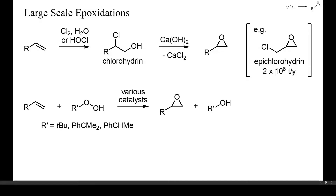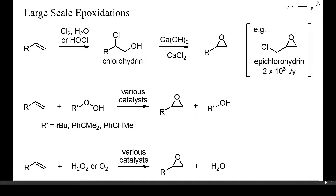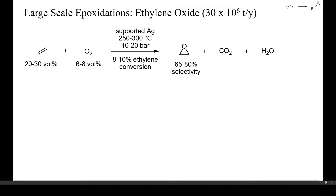More environmentally friendly are epoxidations with the aid of hydroperoxides, because here no chloride waste is generated. The required hydroperoxides can be prepared from alkenes and oxygen, and the main disadvantage of this strategy is the formation of alcohols as by-products. Still more convenient are epoxidations with hydrogen peroxide or oxygen, but not all alkenes can be epoxidized this way, because of allylic oxidation or the oxidation of other functional groups. Ethylene is one of the few alkenes that can be epoxidized with oxygen with the aid of a silver catalyst.